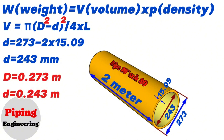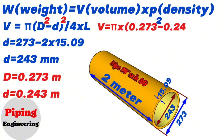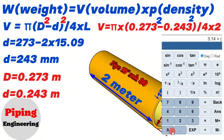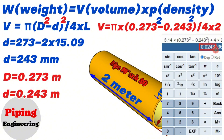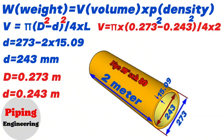Now let's write the information we found into the volume calculation formula. The volume of the 10-inch pipe in our example equals π multiplied by, in brackets, 0.273 squared minus 0.243 squared, divided by 4, multiplied by 2 meters. Using the calculator, we find that 3.14 multiplied by (0.273² − 0.243²) divided by 4, multiplied by 2, equals 0.0243. So the volume of the 10-inch pipe equals 0.0243 cubic meters.